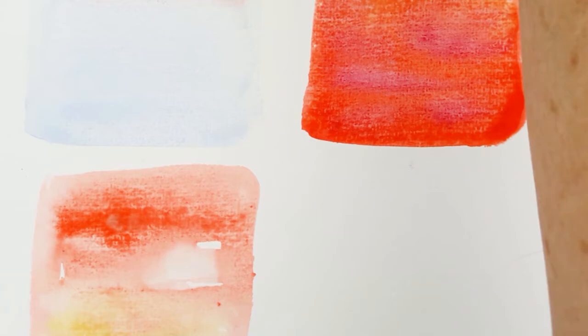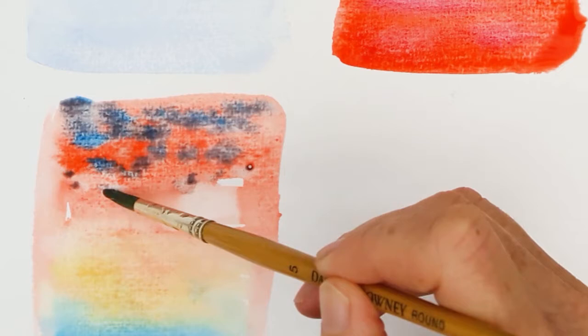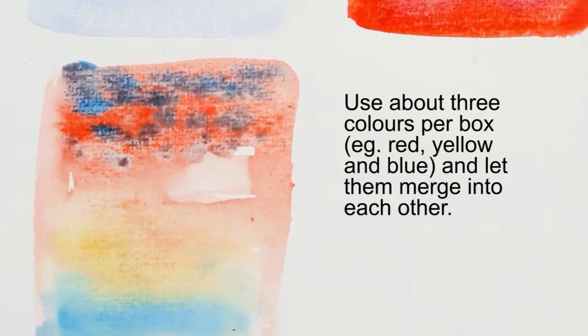All I'm really asking you to do here is put paint on paper and make sure the paint is pretty fluid and wet. You don't want really dry, sticky paint. You put up to three colors on each box that you're doing and let each color merge into the other color a bit.